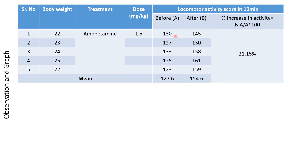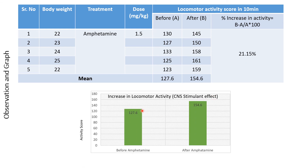After amphetamine, the activity score is increased because amphetamine is a CNS stimulant. The mean after amphetamine comes to 154.6. The percent increase in activity is 21.15%. On the graph, the activity score before amphetamine was 127.6, and after amphetamine it increased to 154.6.